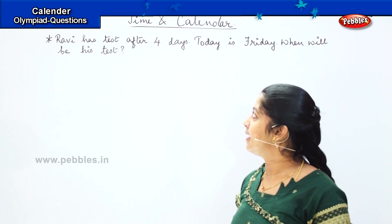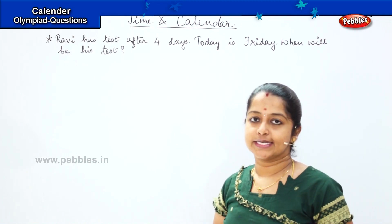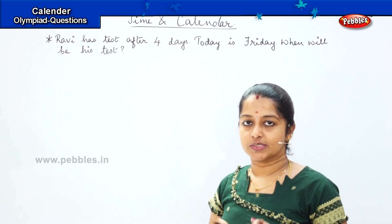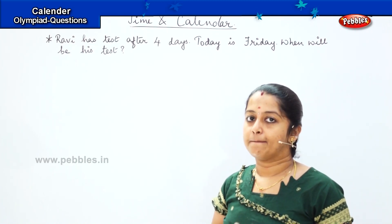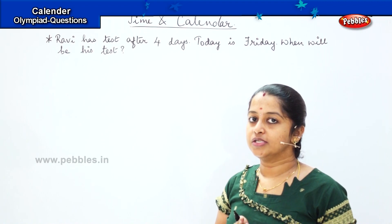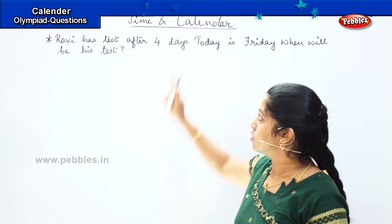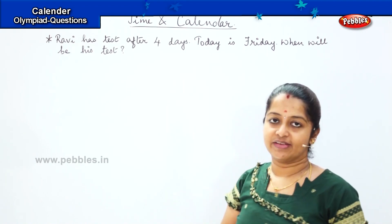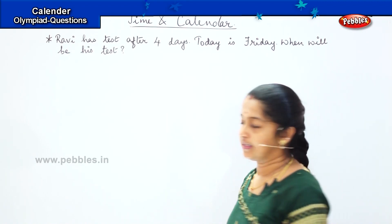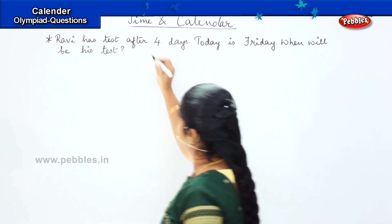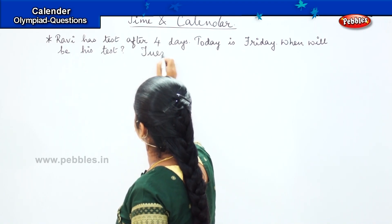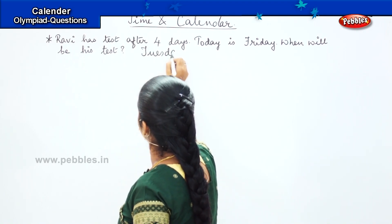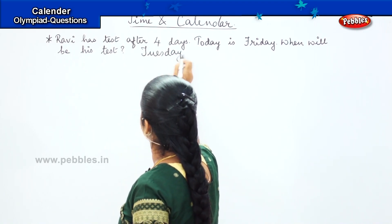Four days from today will be — today is Friday, so Saturday, Sunday, Monday and Tuesday. So when will Ravi have his test? He will have his test on Tuesday.